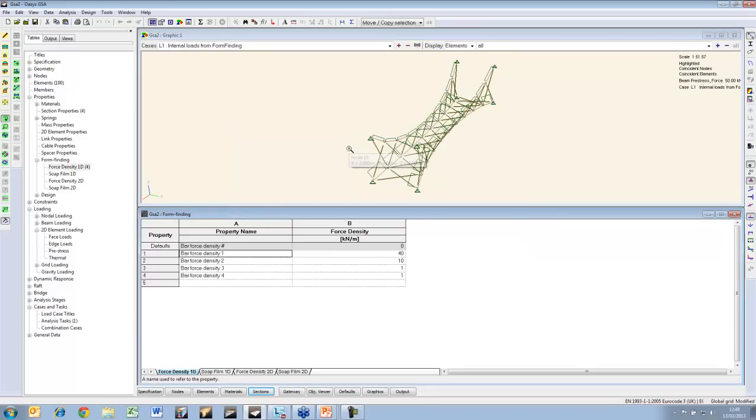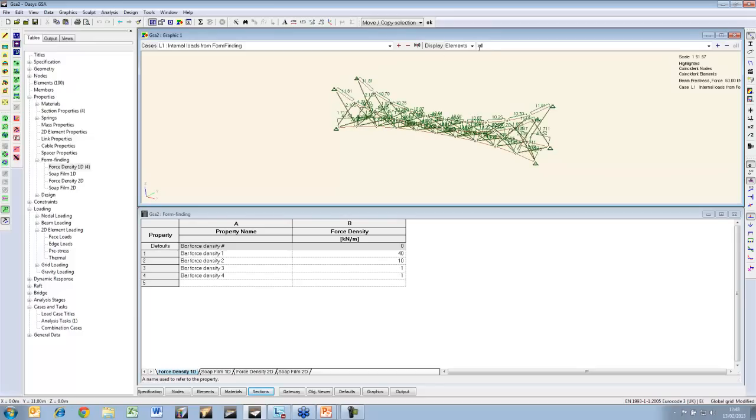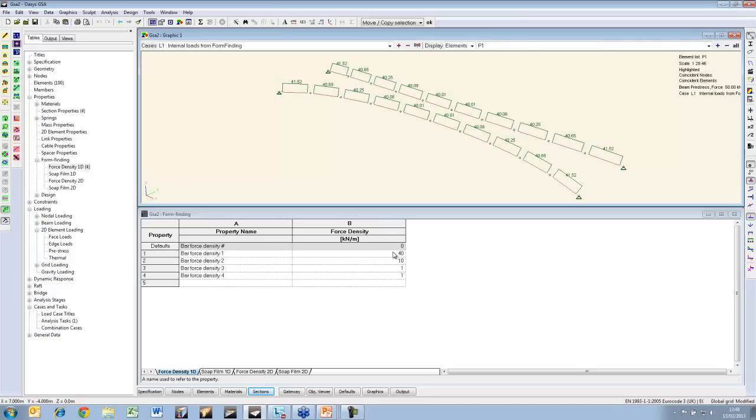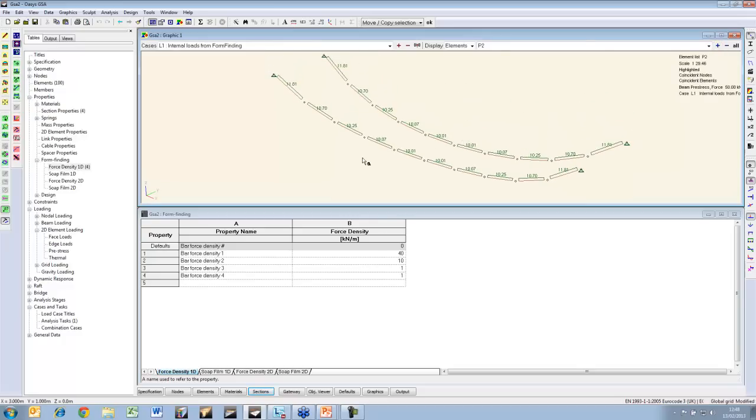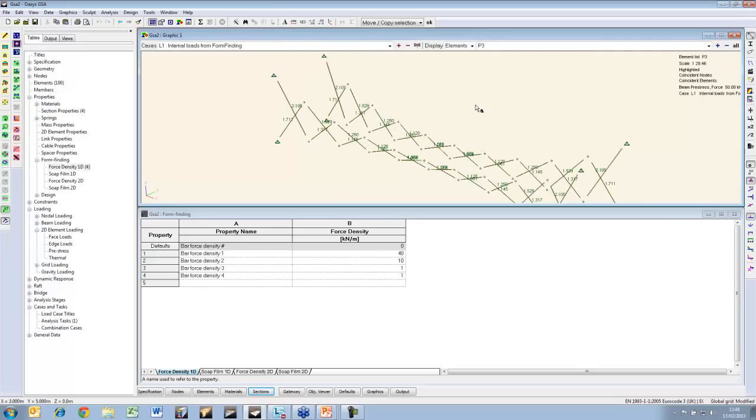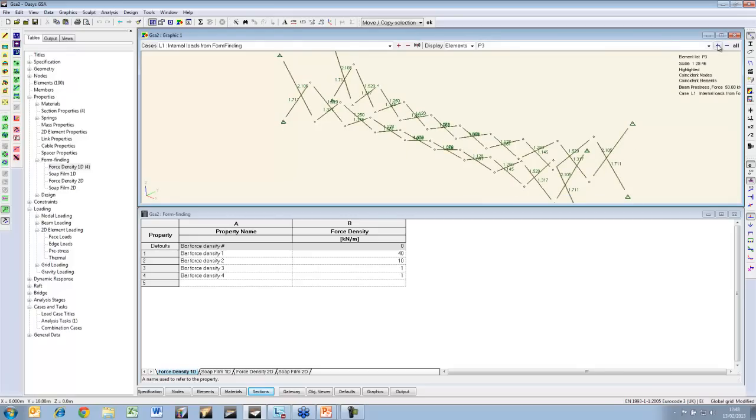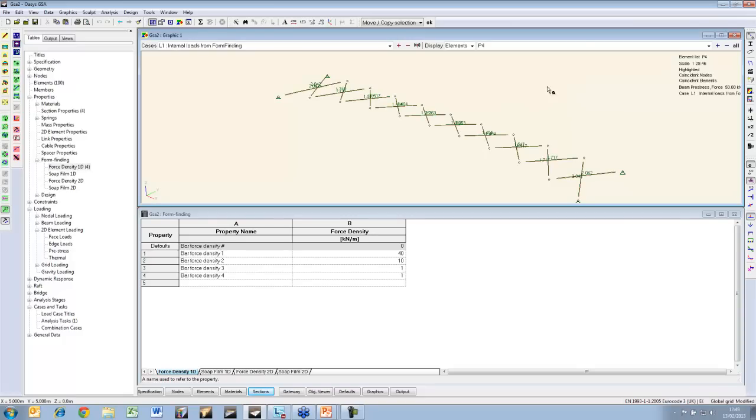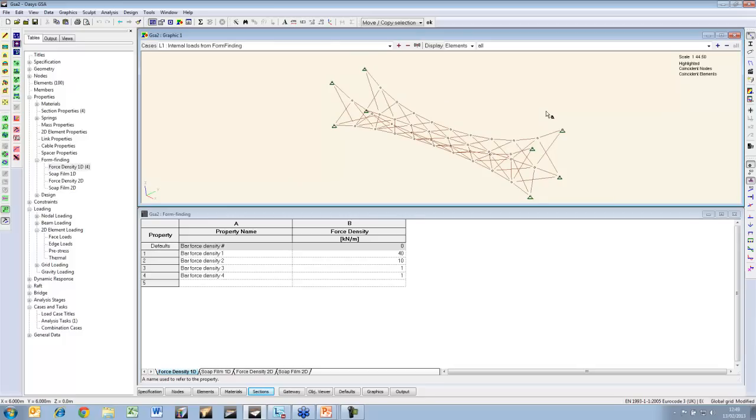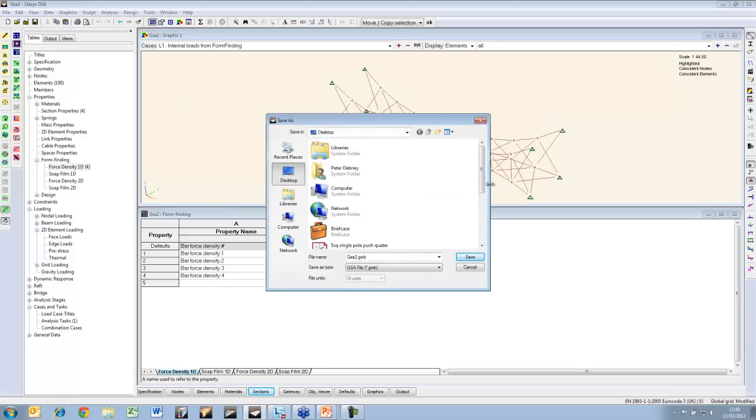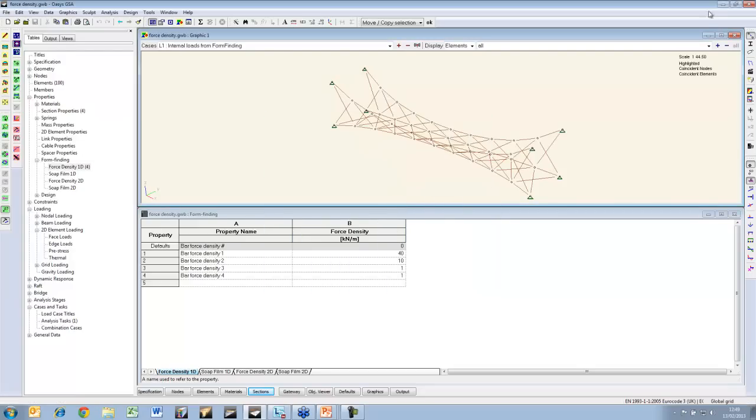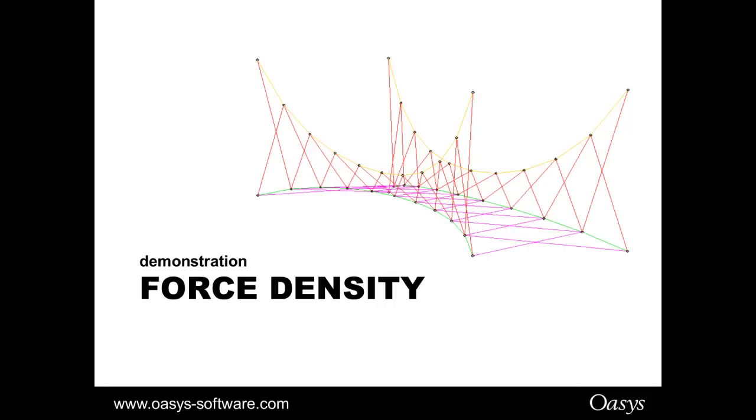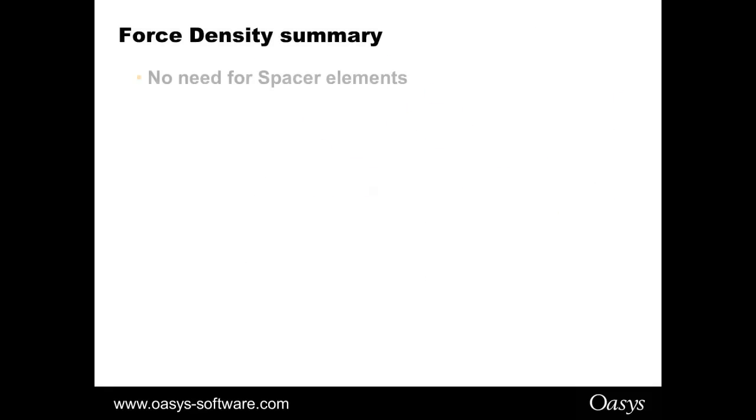Upper cables, 10 force density so long ones. You can see the pre-stresses are in proportion to the element length at the end. And then of course once you have that you can then do the static analysis as before. So that's a force density method. Summary on that: no need for spacers.